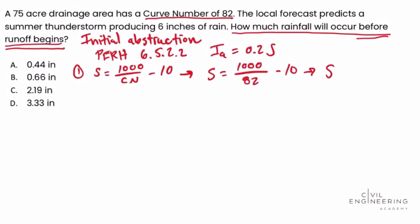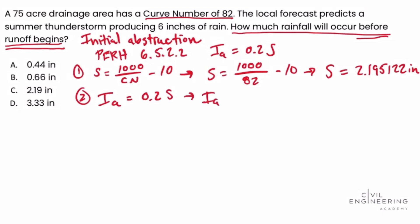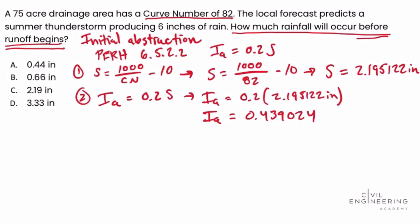S is equal to 2.195122 inches. In step 2, we use the equation for initial abstraction: Ia = 0.2 times S. So Ia = 0.2 times 2.195122 inches, which gives us an initial abstraction of 0.439024 inches.